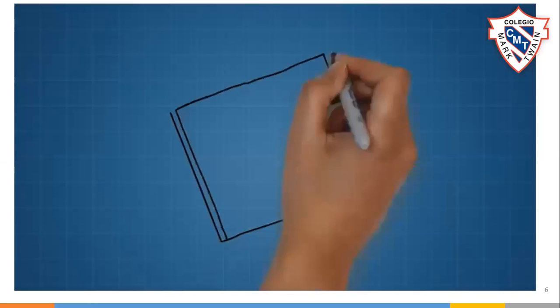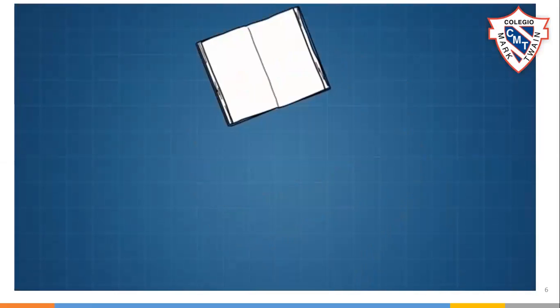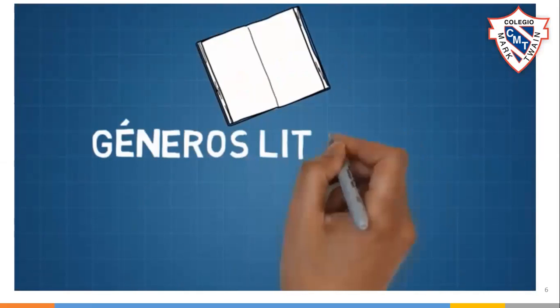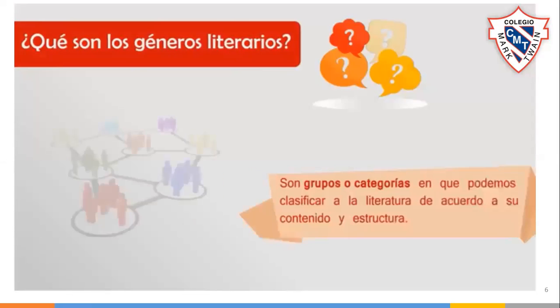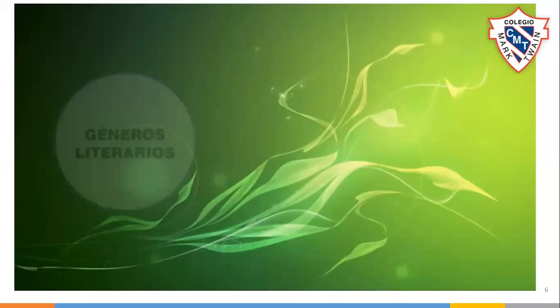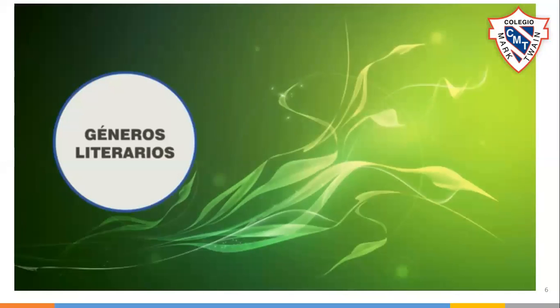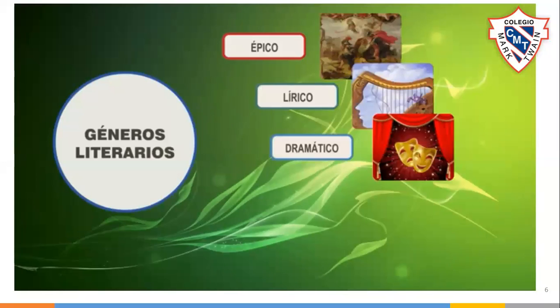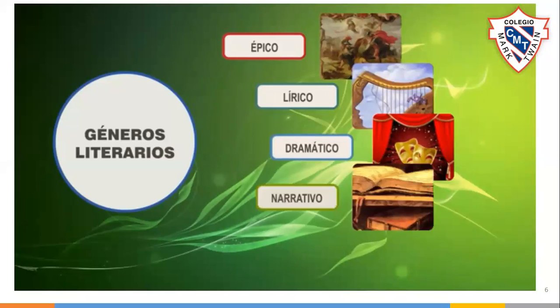La literatura puede ser clasificada en varios grupos. Estas categorías o grupos son llamados géneros literarios. Los géneros literarios son grupos o categorías en que podemos clasificar a la literatura de acuerdo a su contenido y estructura. Tradicionalmente se consideran tres géneros literarios: el épico, el lírico y el dramático. Esta clasificación fue hecha por Aristóteles. Para este caso tomaremos una clasificación que además incluye el género narrativo y el género didáctico.